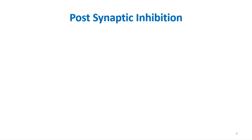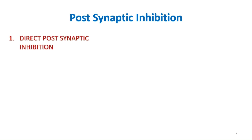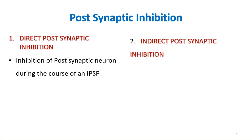The first type is postsynaptic inhibition, where the postsynaptic neuron is inhibited. There are two subtypes: direct postsynaptic inhibition and indirect postsynaptic inhibition.